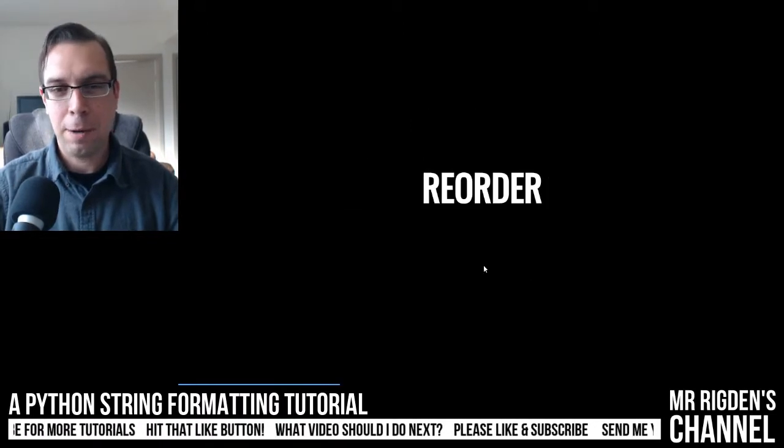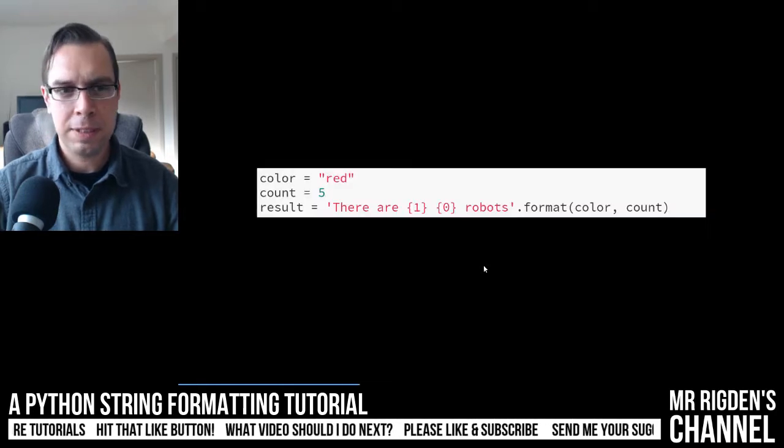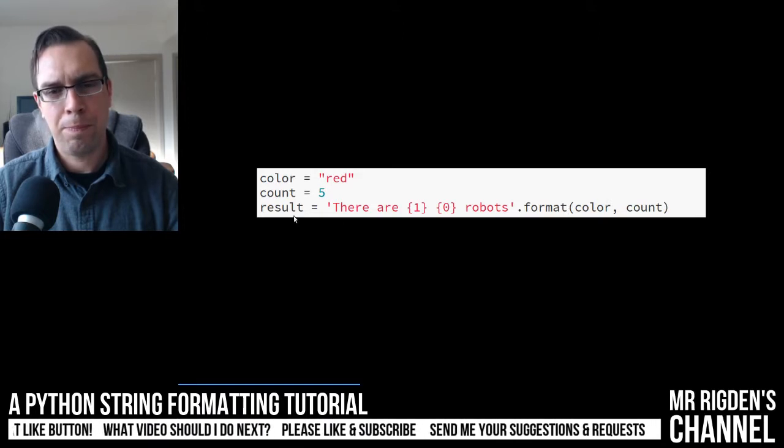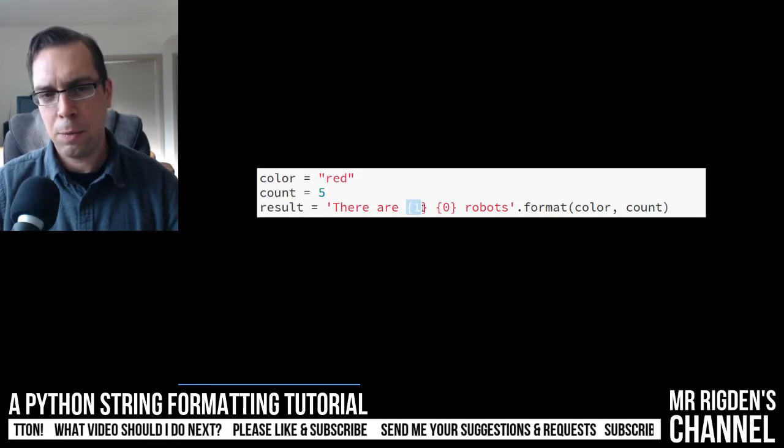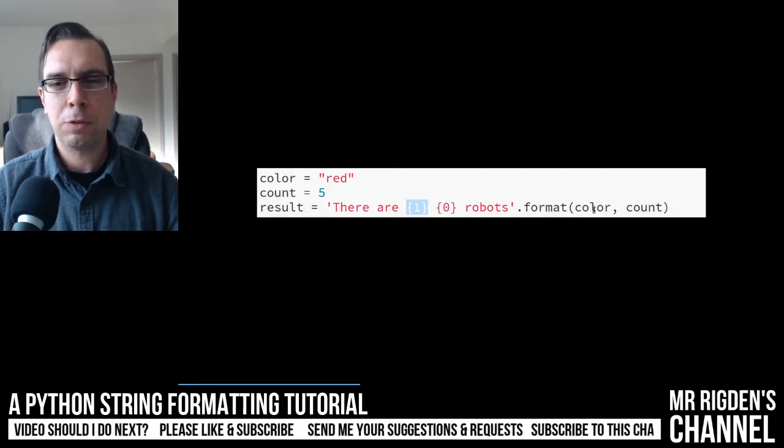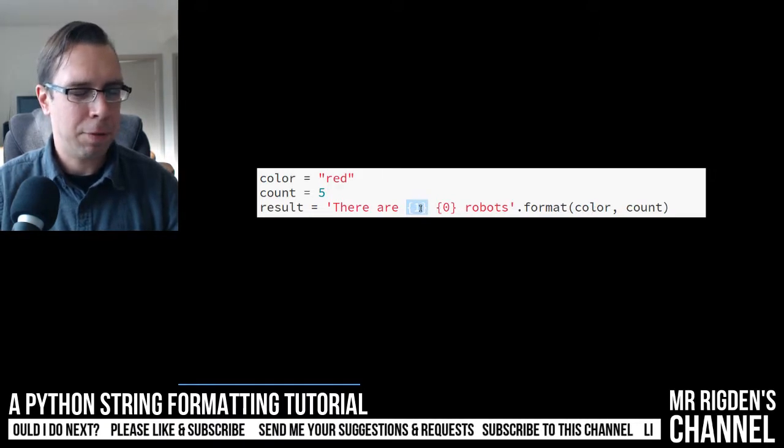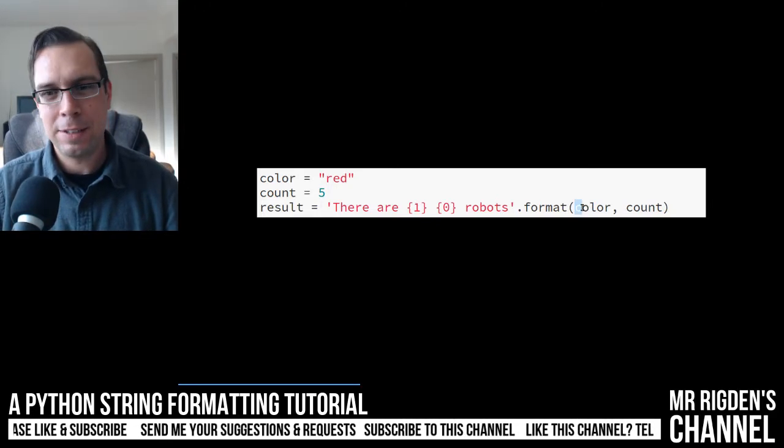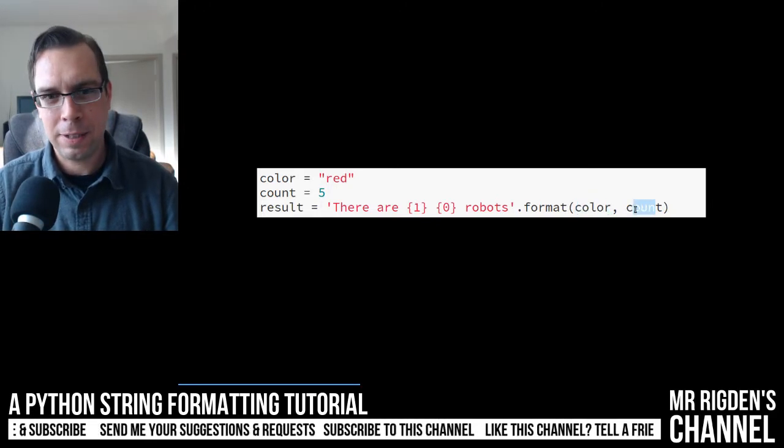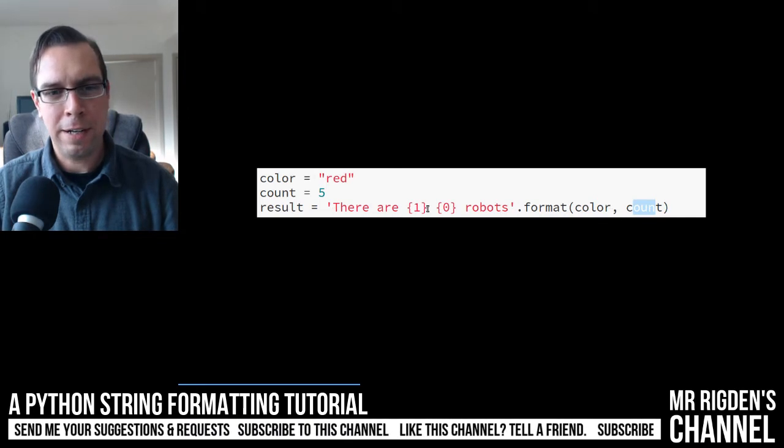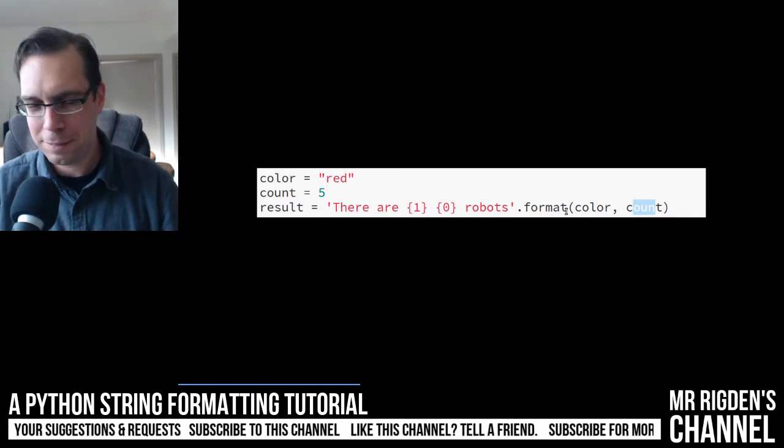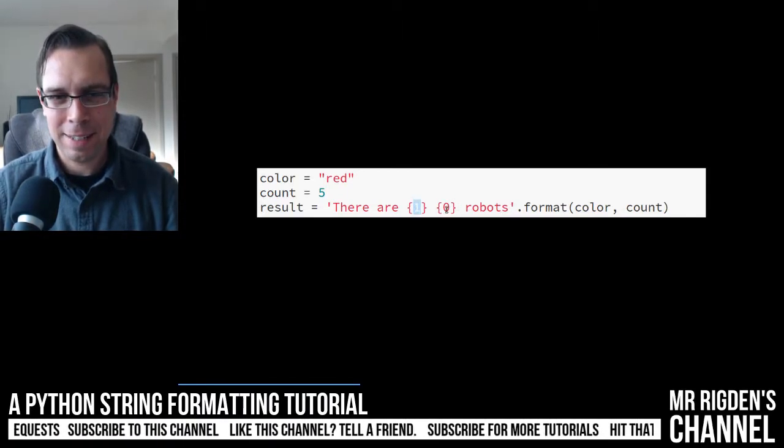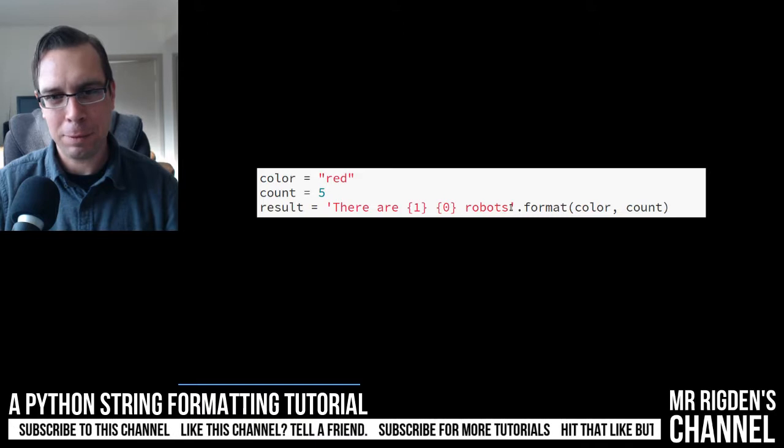What else can it do? We can reorder the variables. So here we go. We've got our same variables here, but we can change them around. So previously the brackets were, the variables were being replaced by the brackets were being replaced by the variables in the order in which they were specified. So here we got color and count. So what it would end up being is there are red five robots.